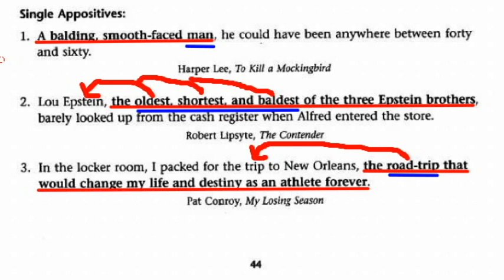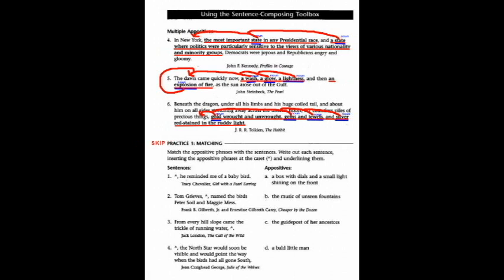'In the locker room, I packed for the trip to New Orleans, the road trip that would change my life and destiny as an athlete forever.' I've underlined the entire appositive phrase 'the road trip that would change my life and destiny as an athlete forever,' and the noun 'road trip' is renaming 'trip,' so I've drawn my arrow from 'road trip' back to 'trip.' Please do all that on your paper — you don't want to get points off for not underlining or not drawing the arrows.